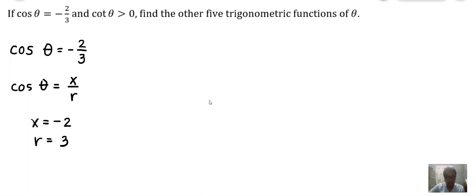We need to be more specific. That's why there's another condition: cot θ > 0. This means θ should be in quadrant 3. Using the two clues together—cos θ is negative and cot θ is positive—we determine it's referring to quadrant 3.